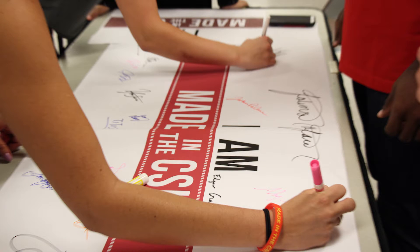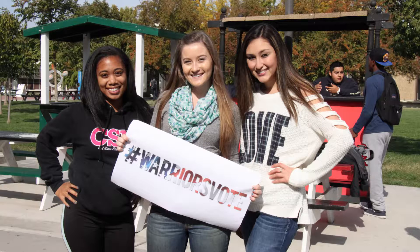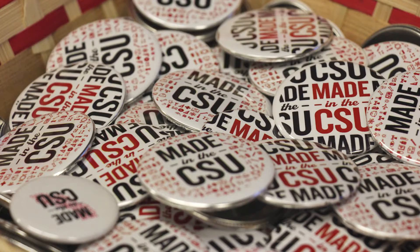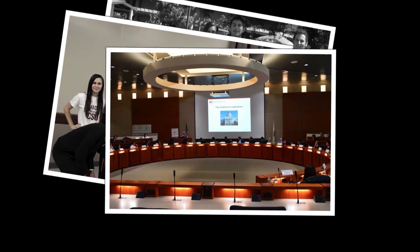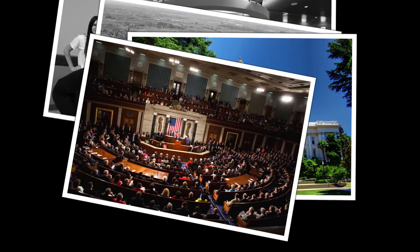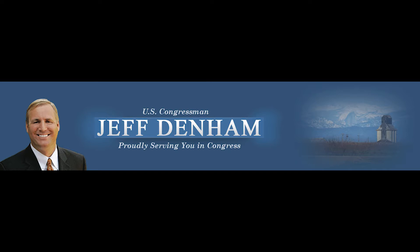The governmental affairs that we focus on in ASI is a lot about funding for the CSU. That's our main focus when we talk to legislators. When we're trying to accomplish a goal, we work a lot with student leaders on campus. Off campus, we work with the California State Student Association, the City Council, assembly members, and the federal congressman for our district here in central California.